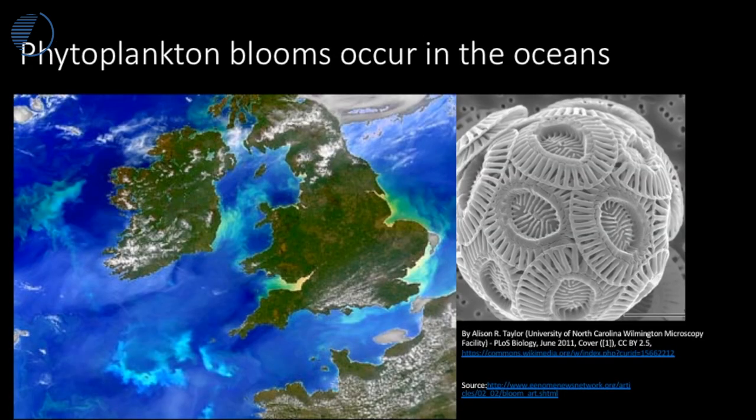The growth of phytoplankton is controlled by the availability of light. They need light and must be in the upper ocean, but they also need nutrients. At certain times of the year, currents from the deep ocean bring nutrients up into the upper ocean.